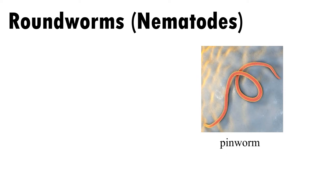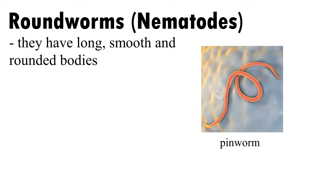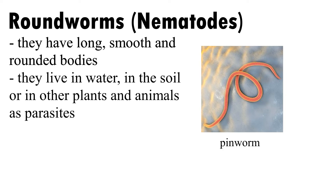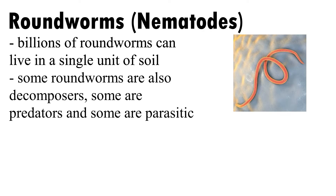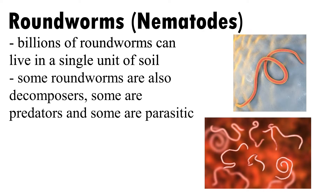Round worms, or nematodes, have long, smooth, and rounded bodies. They live in water, in the soil, or in other plants and animals as parasites. Millions of round worms can live in a single unit of soil. Some round worms are decomposers, some are predators, and some are parasitic.